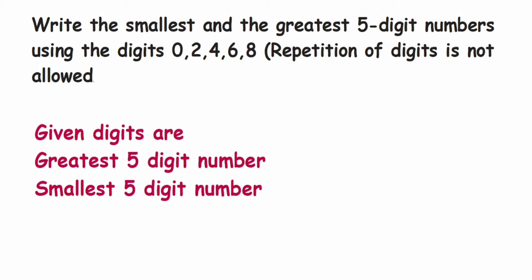Hey everyone, here's a question from the Knowing Numbers chapter. The question is: write the smallest and the greatest five-digit numbers using the digits 0, 2, 4, 6, 8. Repetition of digits is not allowed.